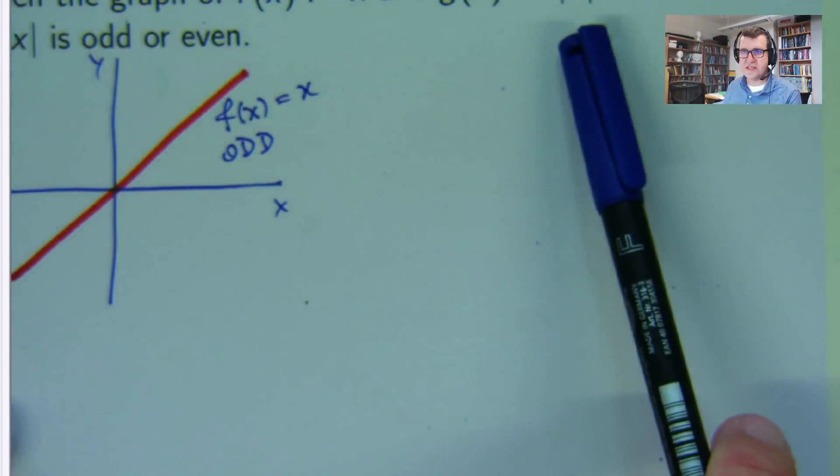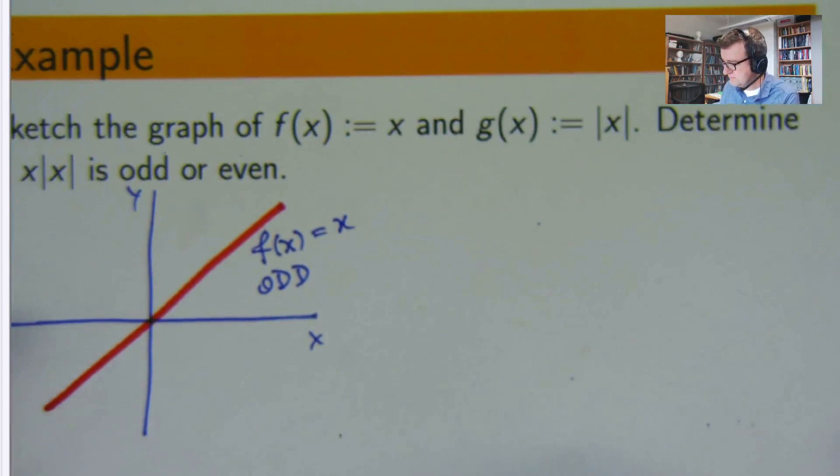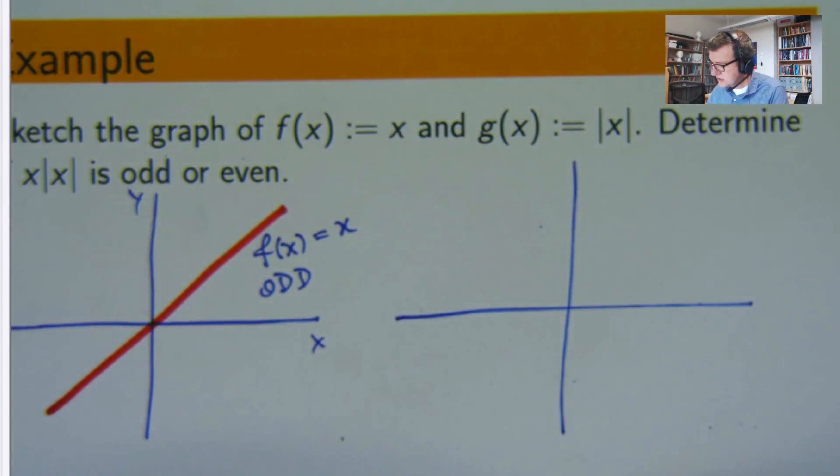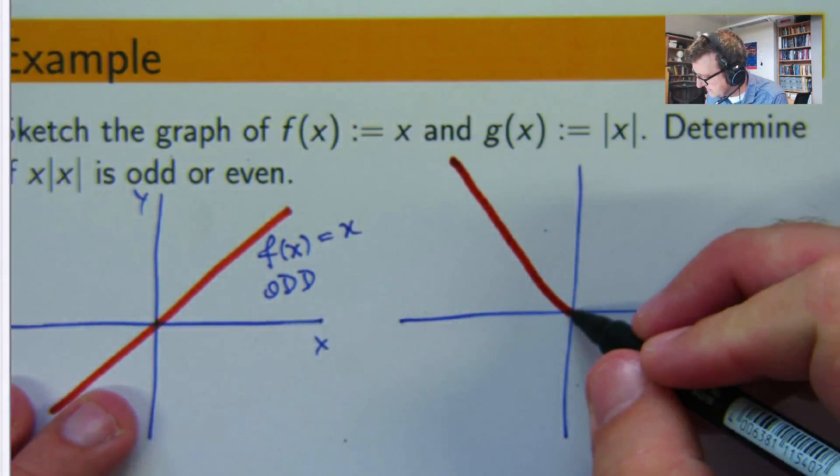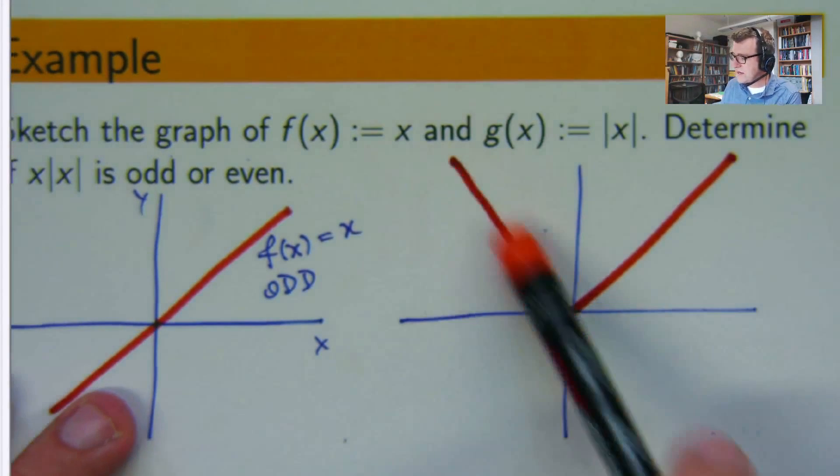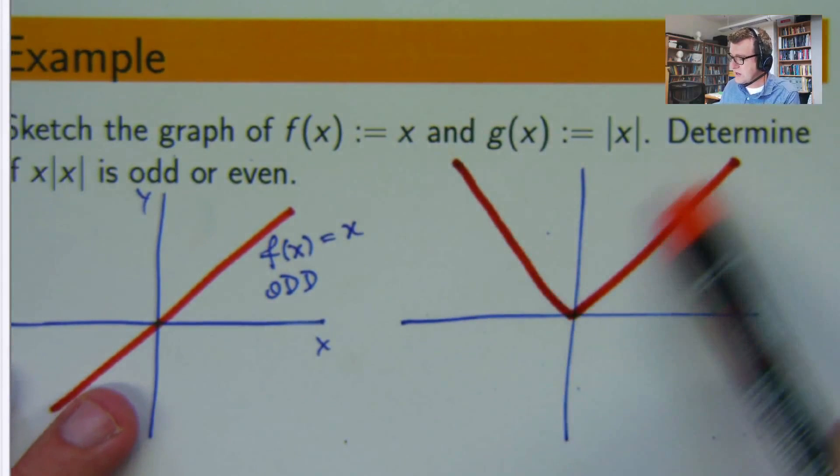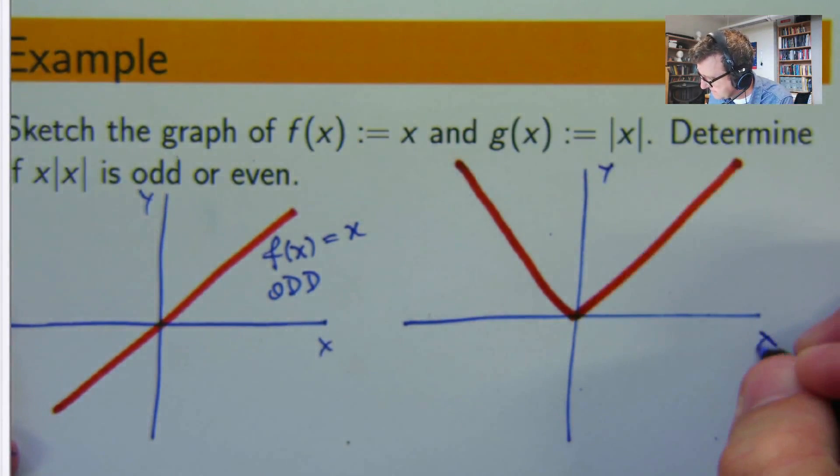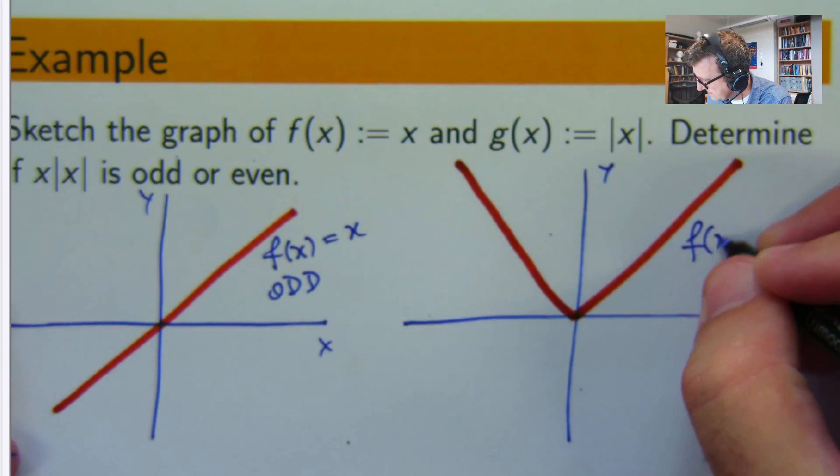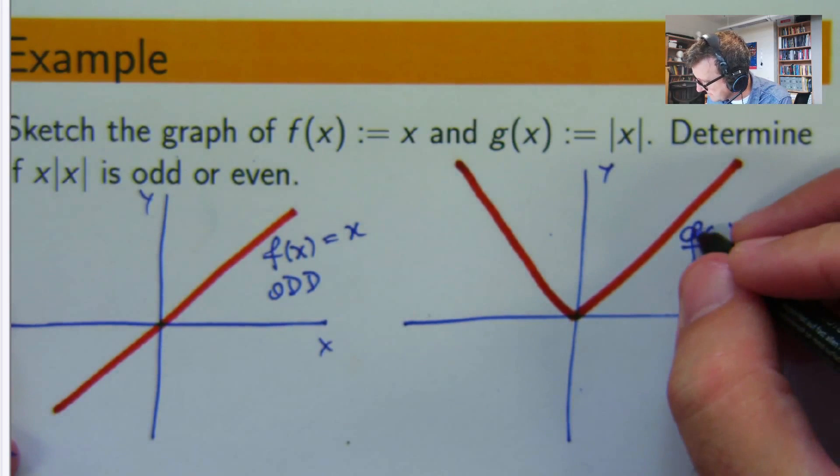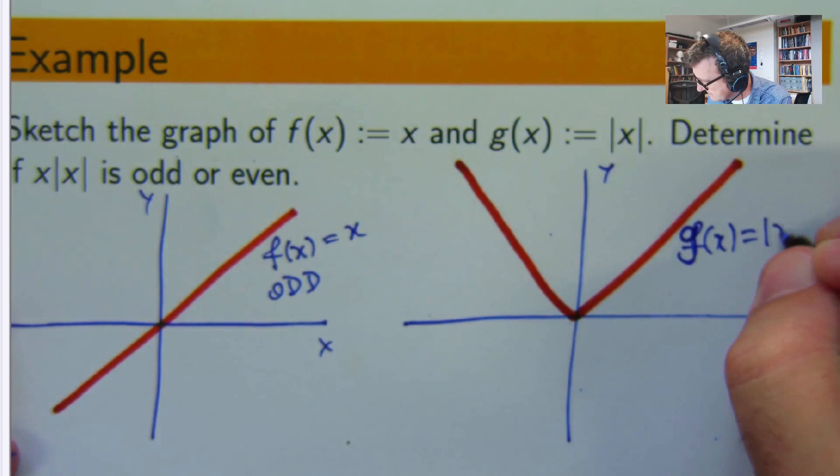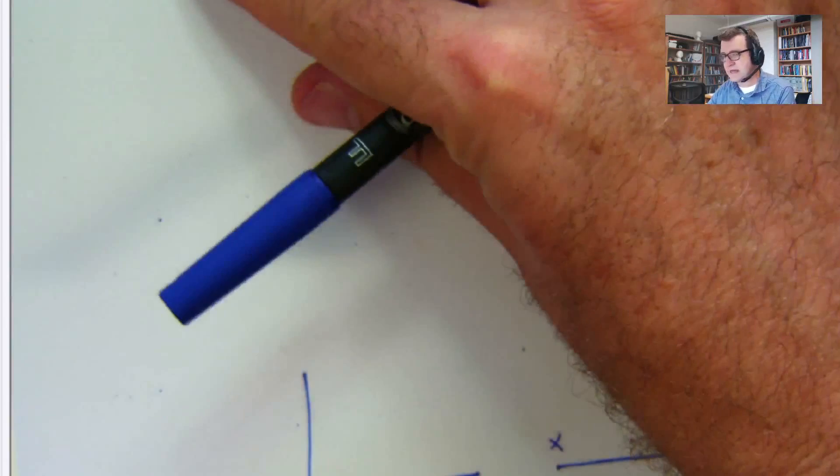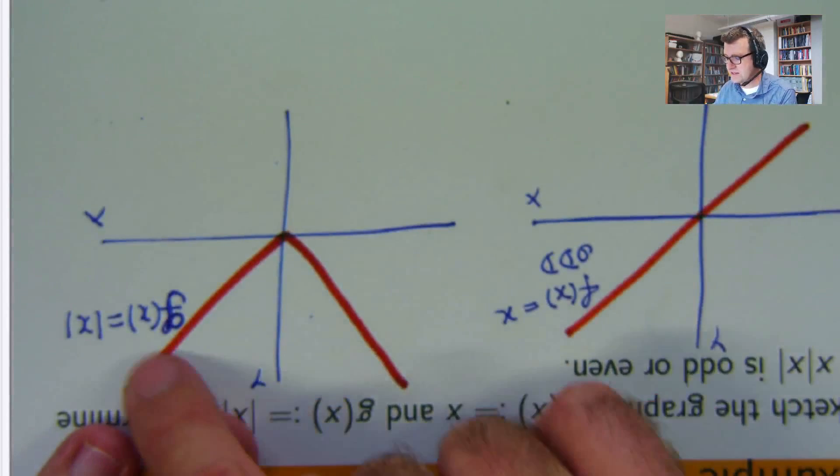Now what about this one? Well, that looks like this function. So here this is the line y equals negative x and this is the line y equals positive x. So if we spin this one, well no, we don't get the same graph.